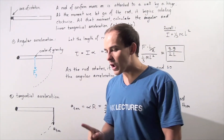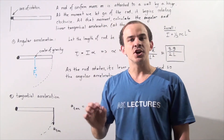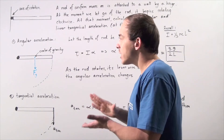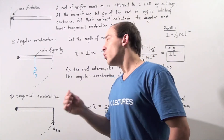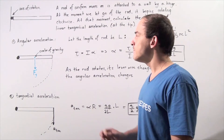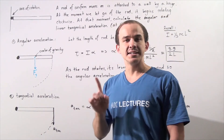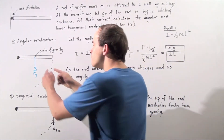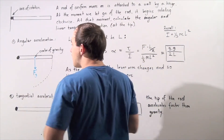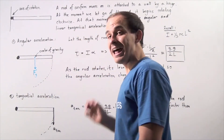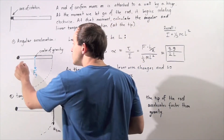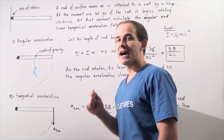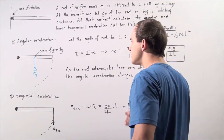The only force acting on our rod when we let go is the force of gravity. The force of gravity acts at the center of gravity. Because our object has a relatively small mass, we make the assumption that the center of gravity is the same point as the center of mass, right in the middle of our object. So if the entire length of our object is L, the position from the hinge to the center of gravity is L divided by 2.